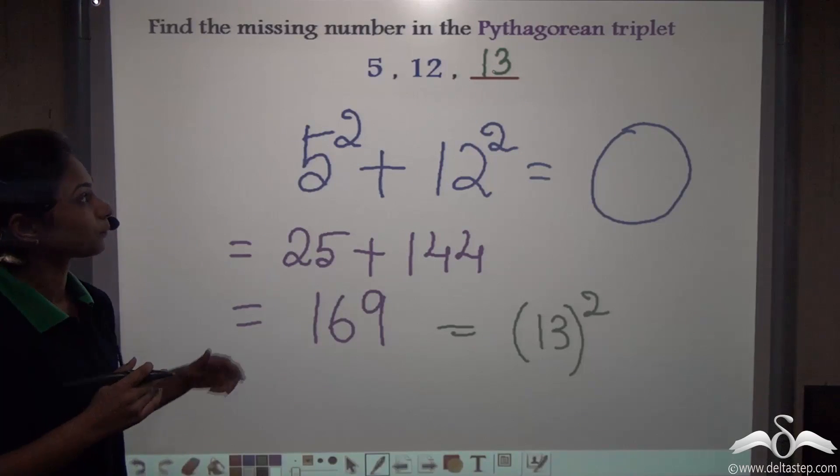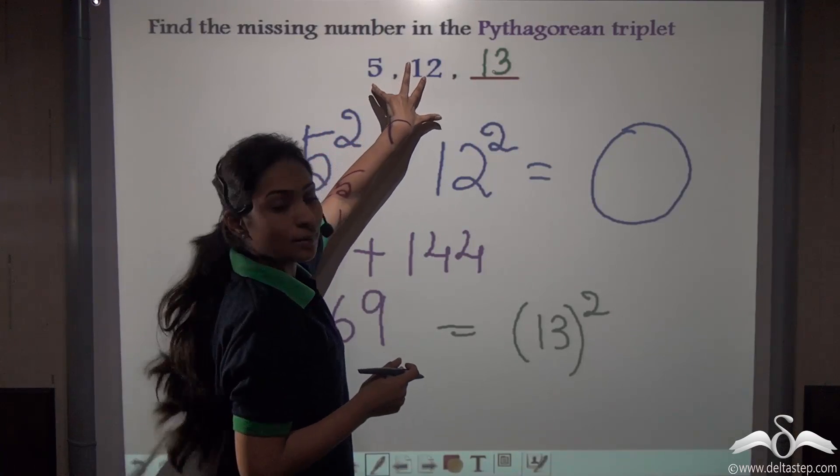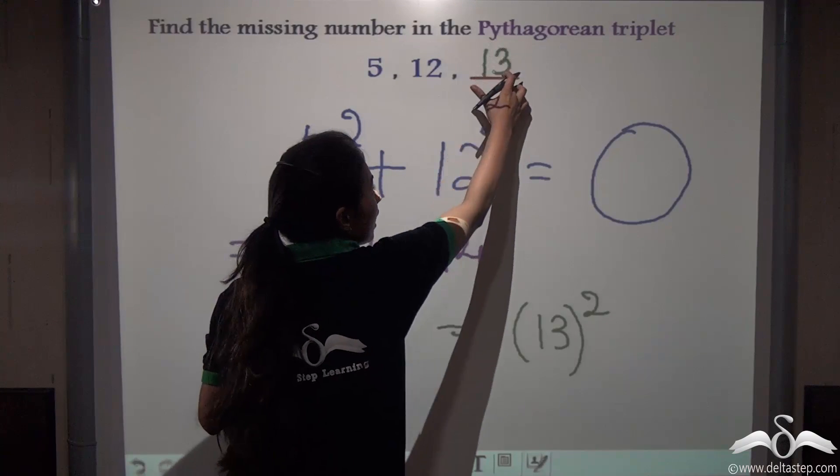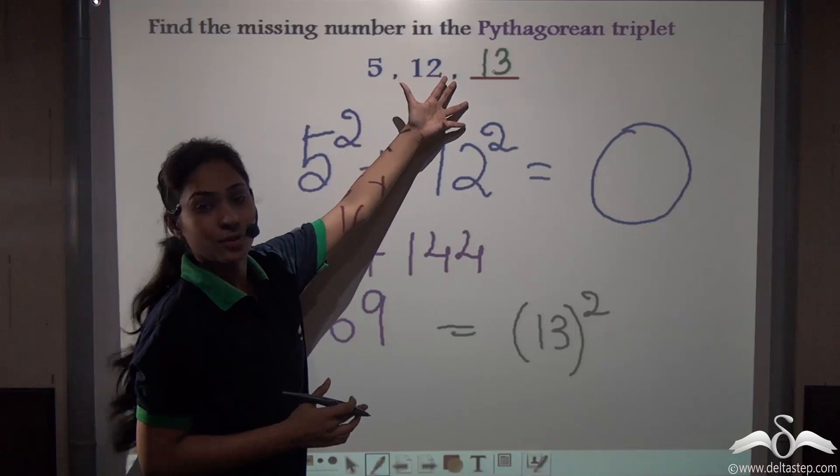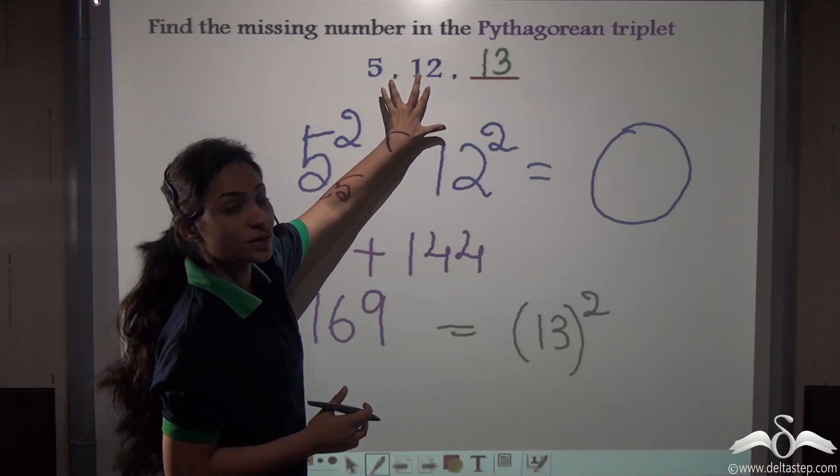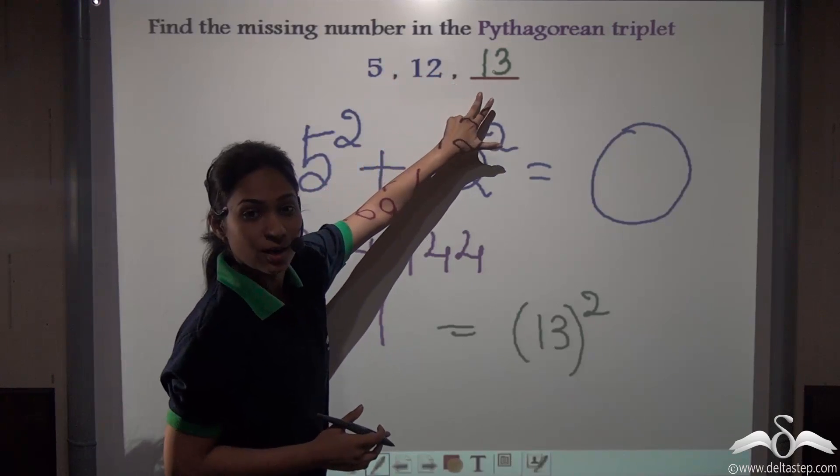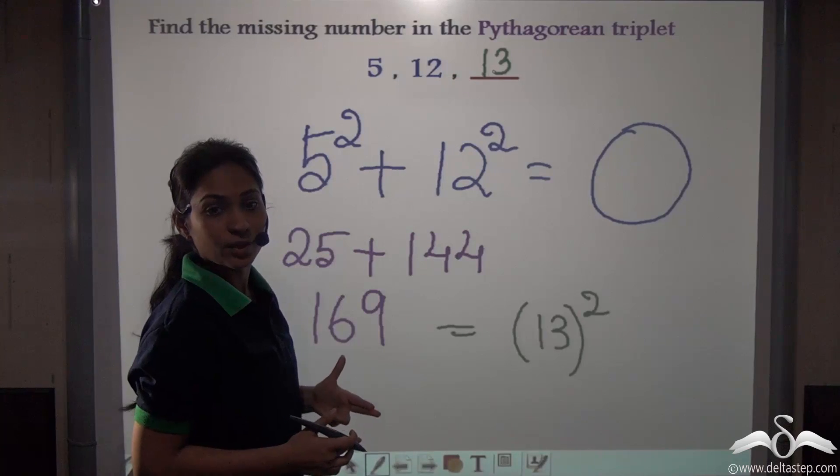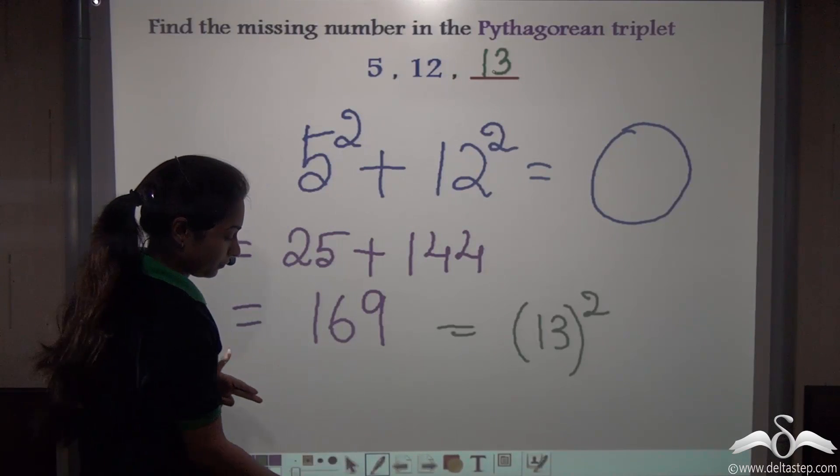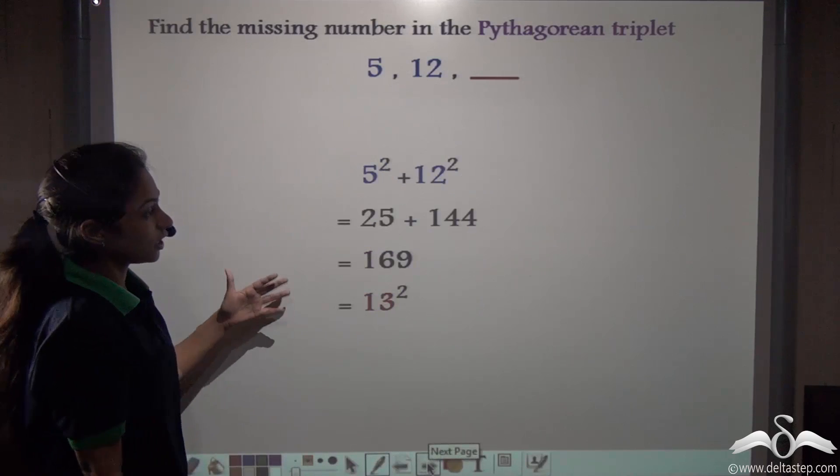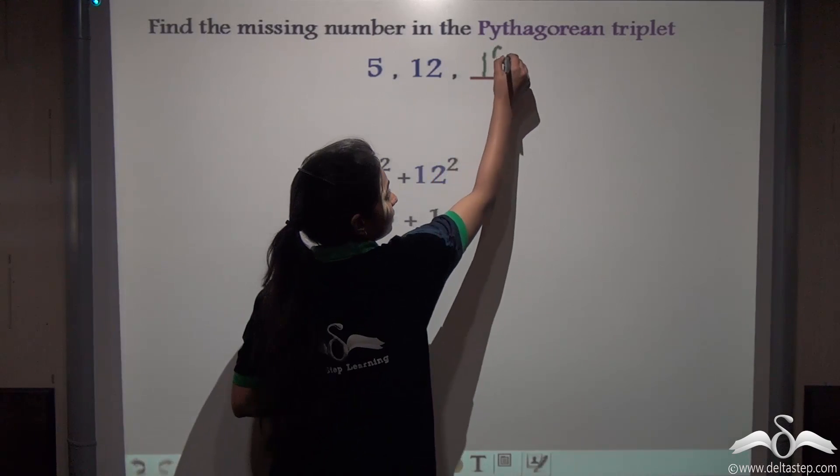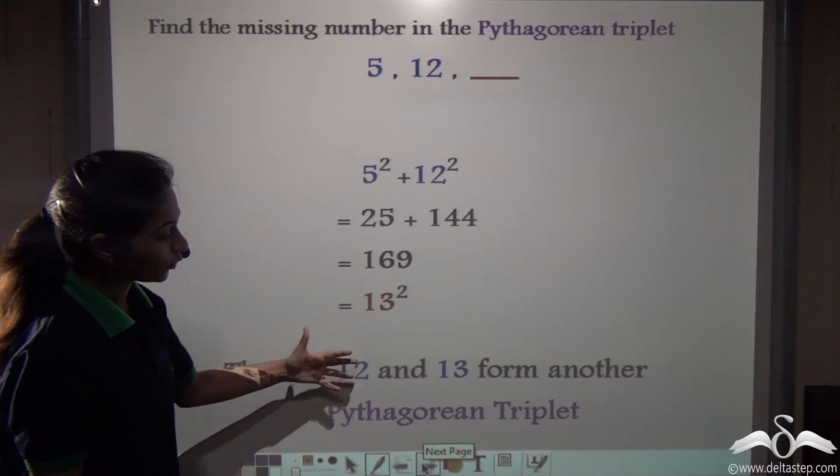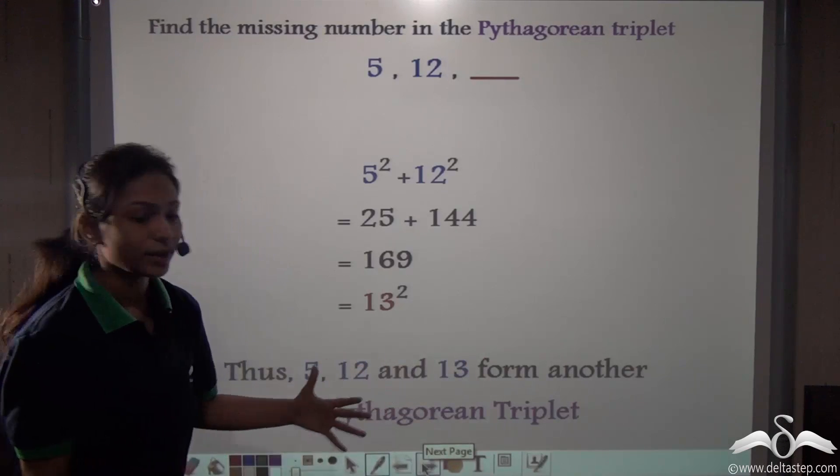Well, do you notice one thing? The two smaller numbers when squared and added gives us the square of the largest number. So whenever you have a Pythagorean triplet, the two numbers which are lesser than the largest number, when squared and added, will always give you the square of the largest number in the Pythagorean triplet. You see, the missing number here is 13.